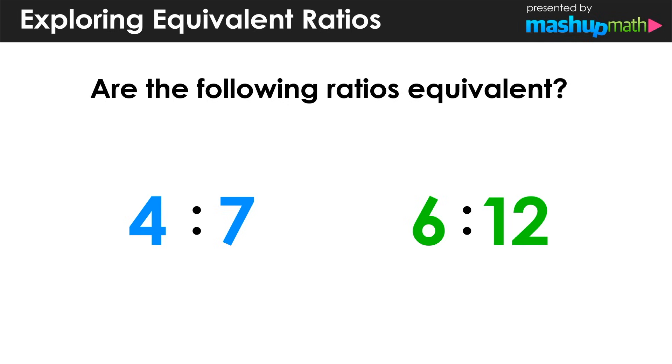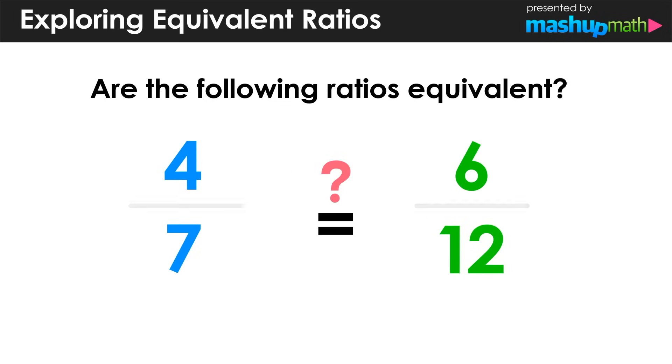Now let's take a look at one last example. In this case, we want to see if the ratio 4 to 7 and the ratio 6 to 12 are equivalent. Just like in the last example, we can start by converting the ratios to fractions with a numerator and denominator.